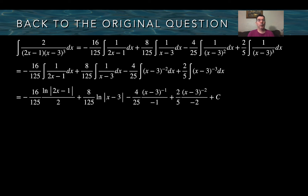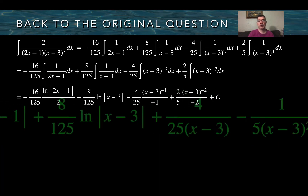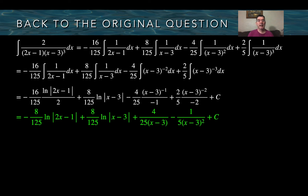The final result is negative 16 over 125 times the natural log of the absolute value of 2x minus 1, divided by 2 — remember to divide by the x coefficient when integrating to get a natural log. The second term is 8 over 125 times the natural log of the absolute value of x minus 3. The last two terms follow the power rule: add 1 to the exponent and divide by the new exponent. Simplify as needed to get nicer fractions, and that is the answer.